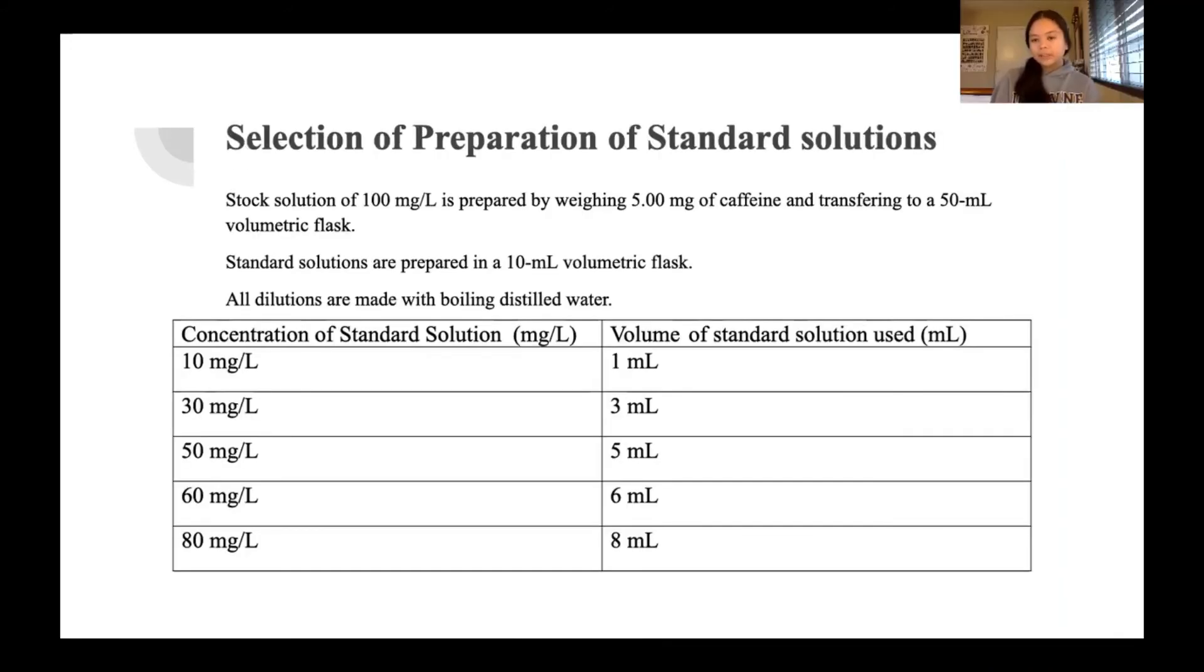To prepare the standard solutions we chose reference 5. The stock solution will be prepared by dissolving 5 milligrams of pure caffeine in a 50 milliliter volumetric flask and this will be diluted to the mark with boiling distilled water. The stock solution will have a concentration of 100 milligrams per liter.